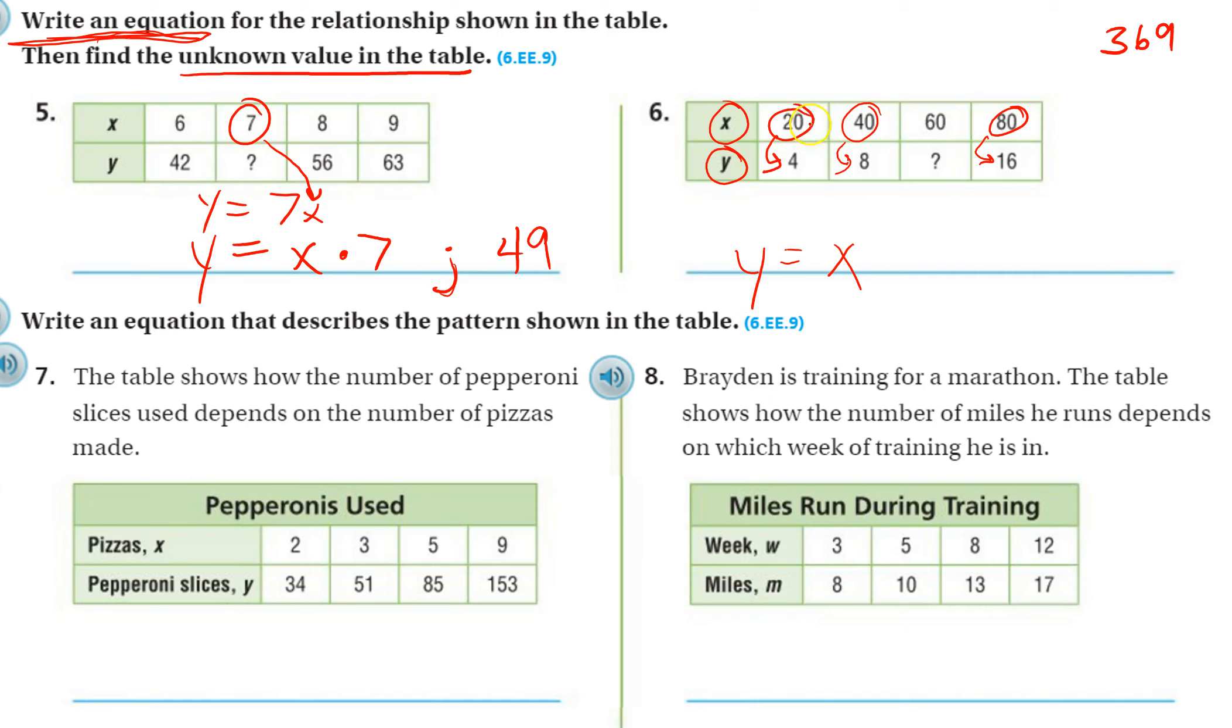So what else could I do to 20? If I'm not subtracting, what could I divide 20 by to get it down to 4? Well, I could divide by 5. So my equation, y equals x divided by 5, or I could write this as y equals x over 5. That means the same thing. Now that I know my equation, now I just need to solve for y here. I plug in 60. 60 divided by 5 is 12.